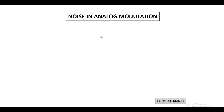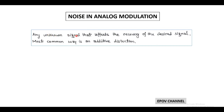Welcome to this new lecture series on Noise in Analog Modulation. Here we discuss the noise performance in different analog modulation techniques. First we need to know what noise is. Noise is any type of unknown signal which distorts the transmitted signal and affects the recovery or demodulation process of the desired signal. During transmission there is an introduction of noise which is additive in nature, and hence called additive distortion.